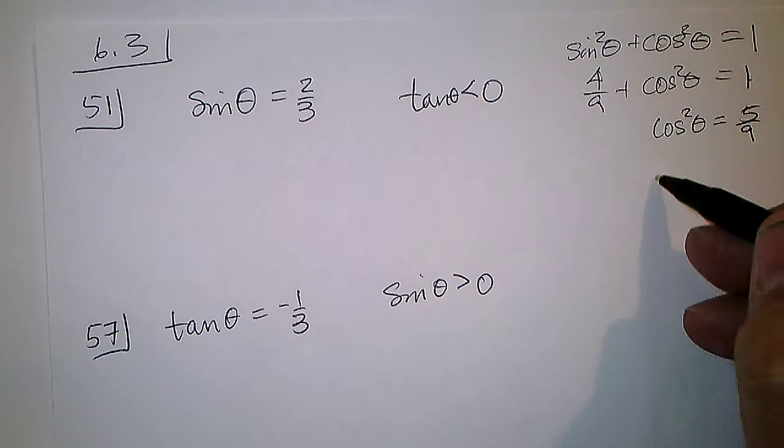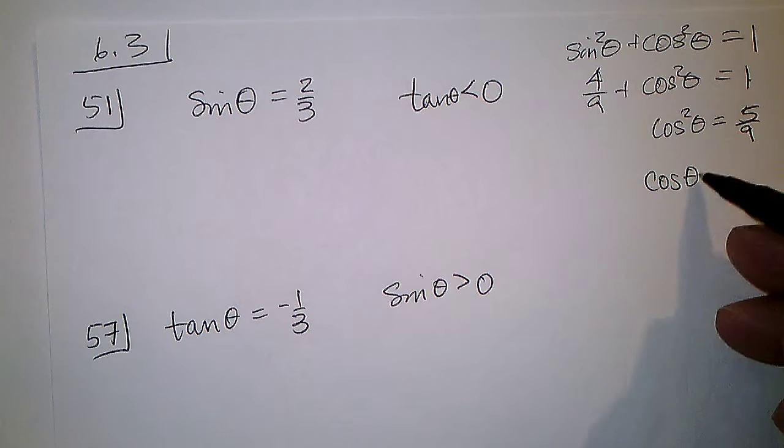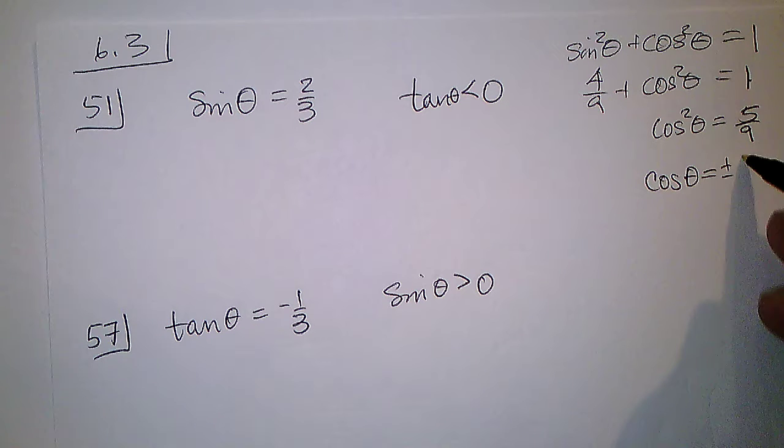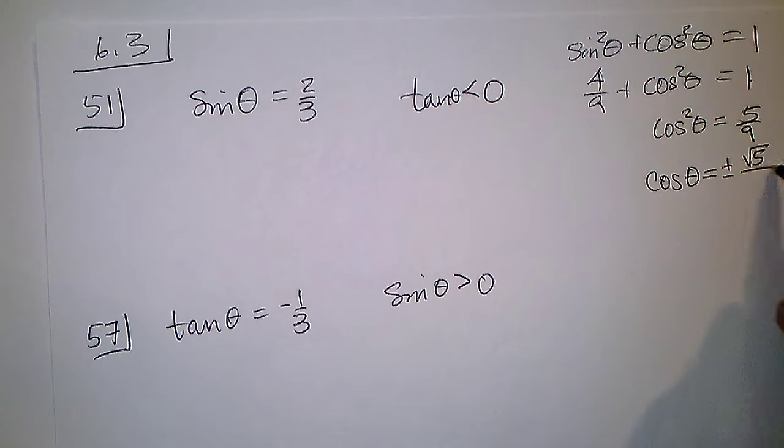Taking the square root, we get the cosine of theta has to be plus or minus the square root of 5 over the square root of 9.